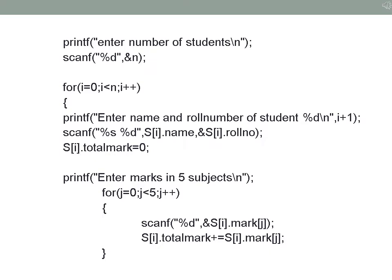Using an inner loop j equal to 0, j less than 5, you enter the marks in five subjects. As each mark is entered you add it to the total: S[i].total_mark plus equal to S[i].mark[j]. The inner loop executes first, all five marks are read and assigned to total_mark. Then you check whether the total is greater than 250 and assign the grade — S[i].grade equal to pass. The outer loop for i equal to 0 repeats until you have read the details of n students.